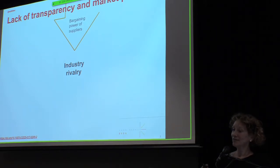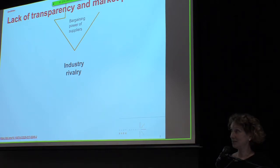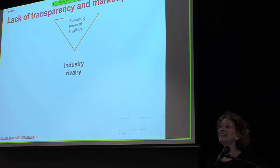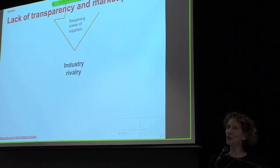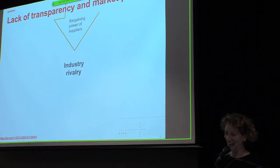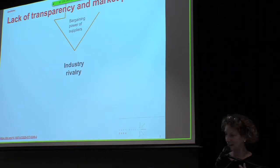Another market force that can influence pricing is the bargaining power of the suppliers. In our world, the suppliers are the authors — they're supplying the goods. Do the authors put much pressure on subscription prices? Zero. They don't know how much it costs; they're shocked when we tell them. So this is a market force that is very low right now in the subscription world.